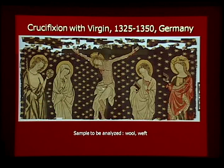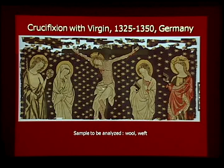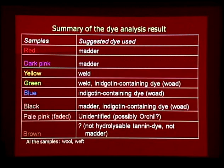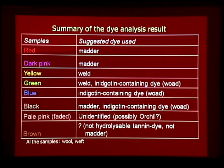At this point, I'd like to show the results of dye analysis of other tapestries in chronological order. This tapestry was probably made in Konstanz, Germany at the beginning of the 14th century. The result: the three principal dyes — madder, weld, and woad — as well as mixtures were mainly used. For black, a mixture of woad and madder was used. No hydrolyzable tannin dye seems to have been used, just as documented in publications.